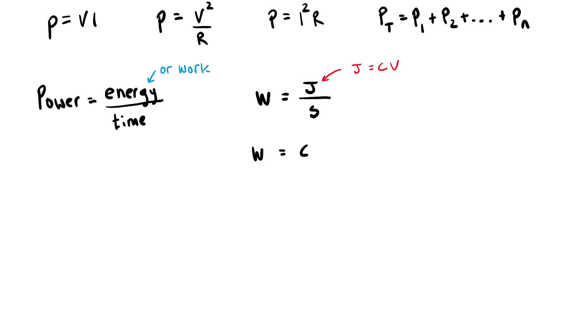So we can rewrite this expression where instead of writing joules on top, we write coulombs times volts over seconds. But if we circle this part here, which is coulombs divided by seconds, that's also the units of amps. An amp is a coulomb per second. So we can rewrite our equation as watts equals amps times volts.